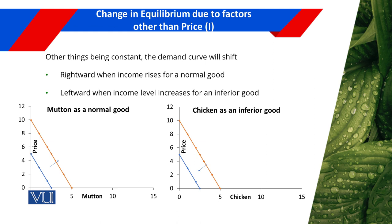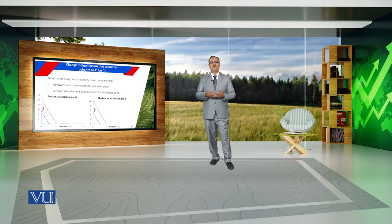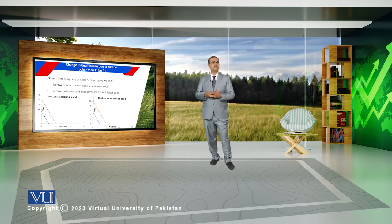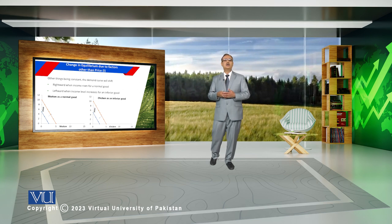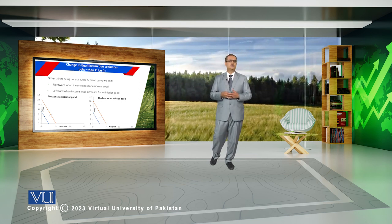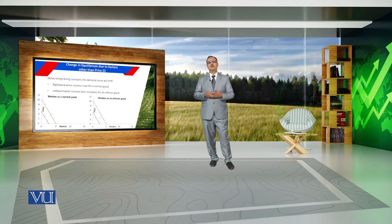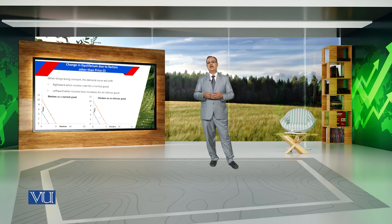In this module, we have discussed the nature of goods used by a particular consumer. We categorize goods as normal or inferior based on the association between quantity demanded and income. If there is a positive association between quantity demanded and income, the commodity is a normal good. If there is a negative association, then the commodity is an inferior good.